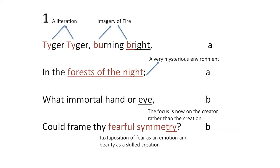"Tiger, tiger, burning bright." Look at the repetition — this is literally called alliteration, with the sounds 'ta, ta' and 'b, b' from 'tiger, tiger, burning, bright.' This alliteration introduces a sort of heaviness to the poem and also evokes Smithian aspects in the text. The phrase 'burning bright' provides an imagery of fire.